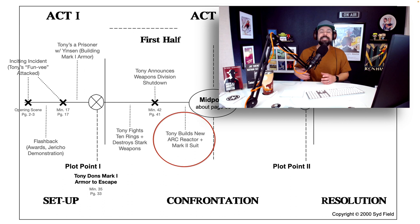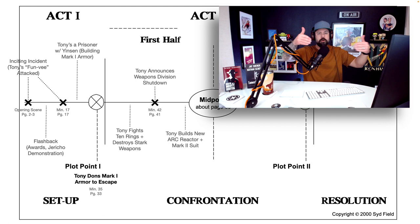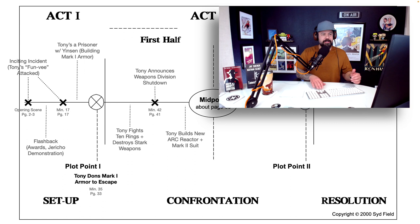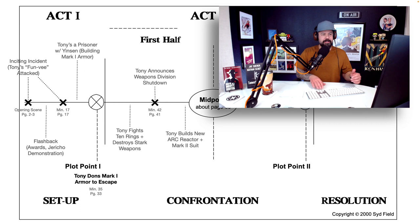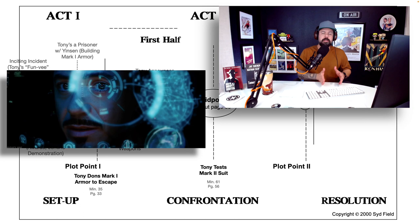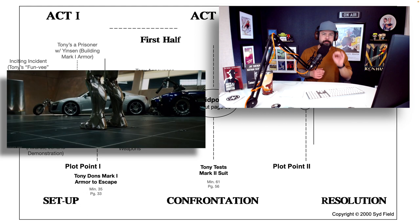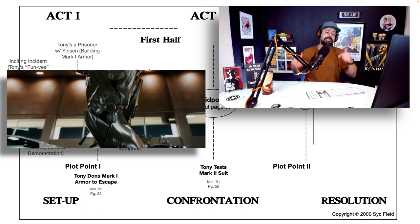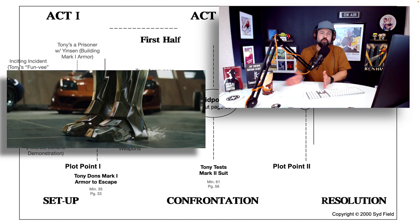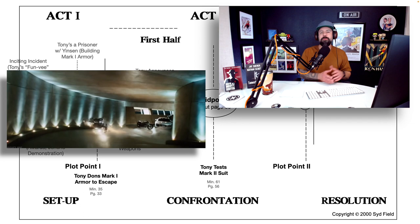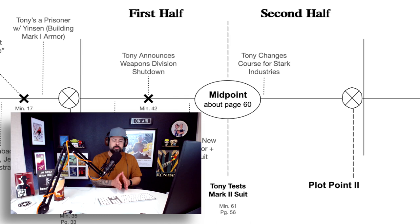Once Tony is done building the arc reactor and the Mark 2 suit, he tests it by taking it out for a test flight. That happens on page 56 in the script, which is quite different from the film where it happens at around minute 61. But that is technically the midpoint of this story. The Mark 2 being placed on Tony and him testing it out is the midpoint of the film, because now the story moves quite a bit forward — Tony has a new piece of machinery far better than the Mark 1.